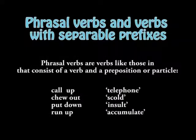The next is phrasal verbs and verbs with separable particles. Phrasal verbs are verbs that consist of a verb and a preposition or a particle. You can read the examples here. The two parts of phrasal verbs can sometimes — and sometimes must — be separated, as shown in this example. A similar issue arises with what are called verbal prefix verbs in the Dutch language, as shown in this example.